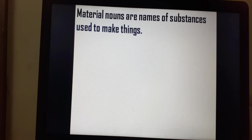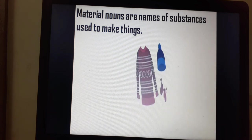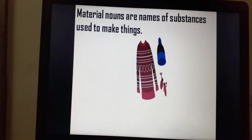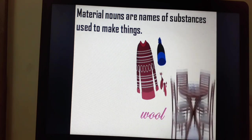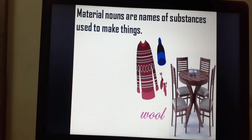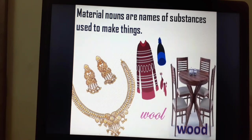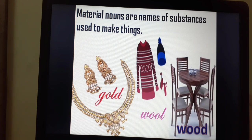Material nouns are the names of substances used to make things. For example, here are some woolen clothes — these are made up of wool. The table and chair are made up of wood. This necklace is made up of gold. So, gold, wool and wood are material nouns.